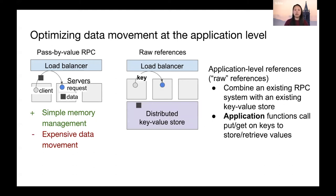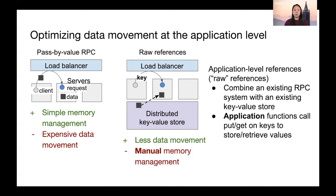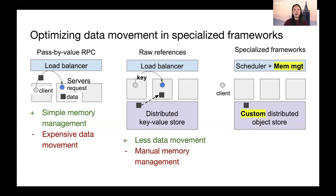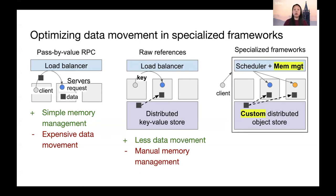Now the client passes only the key and the server can fetch the data from the key-value store, so we no longer have to send all arguments from the client. However, this design forces the application to implement manual memory management. Using keys as references is like using raw pointers in a traditional program, and it's up to the developer to make sure they get cleaned up properly. Since manual memory management requires significant developer effort, usually this task gets handled by a specialized framework like Apache Spark for data processing. The framework manages all execution and data movement within the cluster, providing efficient and automatic memory management for end-user applications.